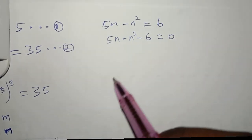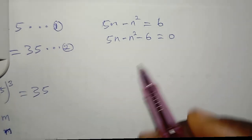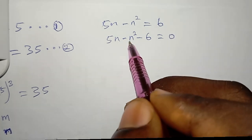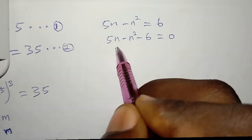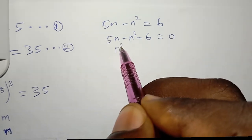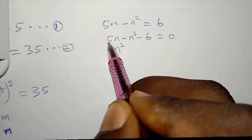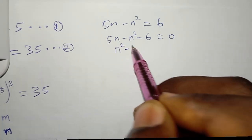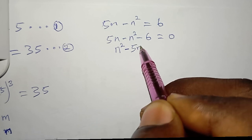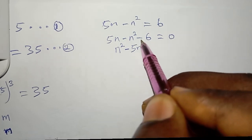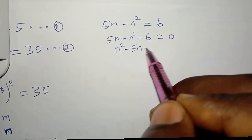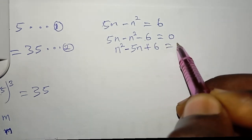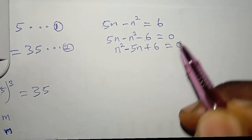Multiplying through by −1 gives n² − 5n + 6 = 0.